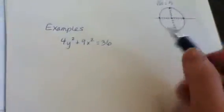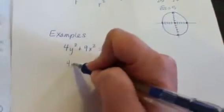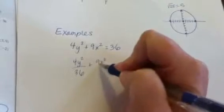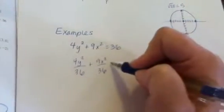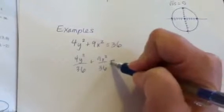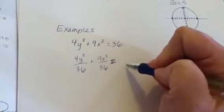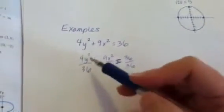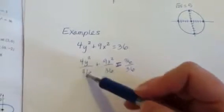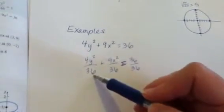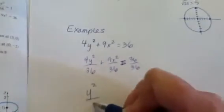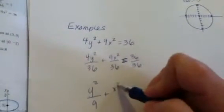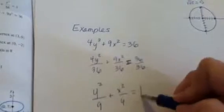Let's go ahead and do the same step I just did on the previous problem, where I'm going to take both sides and divide by 36. So I have 4y squared divided by 36, plus 9x squared divided by 36, and that equals 36 divided by 36, which is 1. Now we can reduce this: 4 goes into 36 nine times, so this reduces to y squared over 9. And 9 goes into 36 four times, so this part reduces to x squared over 4. And of course that part is 1.